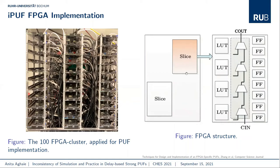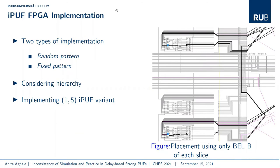The general FPGA architecture consists of configurable logic blocks (CLBs), each containing two slices, where each slice contains four LUTs (BELs: BEL A, B, C, D). In our ARPUF implementation, each switch stage is implemented using five LUTs. We therefore applied two placement strategies: a random pattern, where BELs are randomly selected for each LUT in each slice, giving 4^N possible cases; and a fixed pattern, where only specific BELs are used per slice.